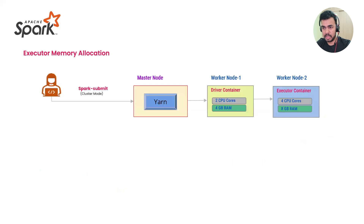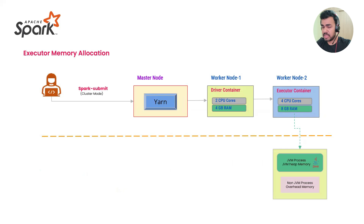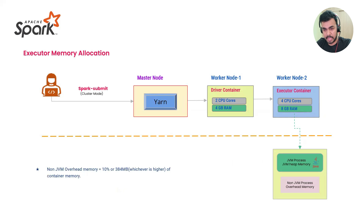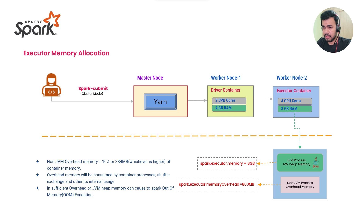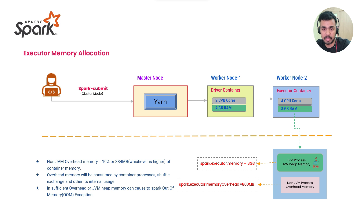Now moving to the executor container — the same diagram applies. It also uses 10% overhead memory. The small difference is the configuration: instead of spark.driver.memory, you use spark.executor.memory. If the executor has 8GB, then 10% of 8GB goes to overhead, which is 800MB.